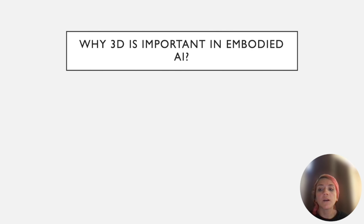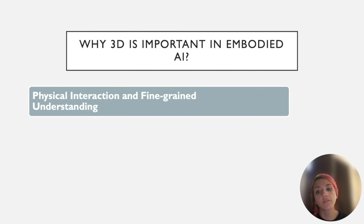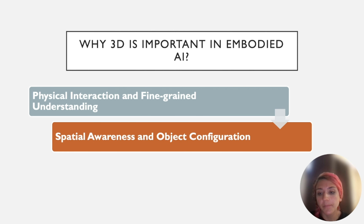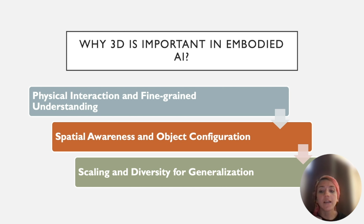First, let's address why 3D understanding and structure is important in embodied AI. At the most fundamental level, interacting with objects, particularly articulated ones, demands a detailed understanding of these objects. Moving up a level, embodied agents not only need to comprehend individual objects, but also have an understanding of spatial relationships between them. At the highest level, leveraging the benefits of scale and diversity is key to improving embodied AI's performance.